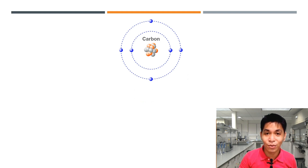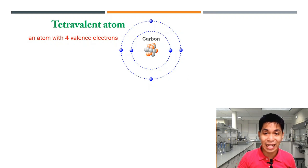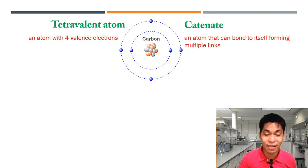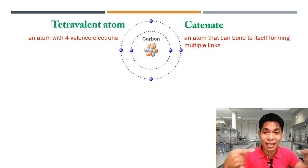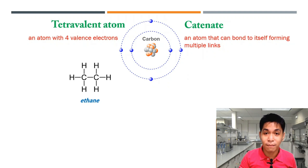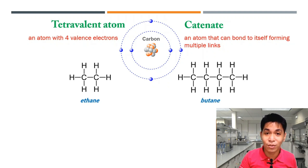Now, what makes carbon so special? Carbon is said to be a tetravalent atom, meaning it is an atom or element that has four valence electrons — 1, 2, 3, and 4. This property of carbon makes it possible for it to catenate, which means it can bond and link to itself to form multiple bonds. For example, two carbons linked together form ethane, or by linking four carbon atoms to form butane.